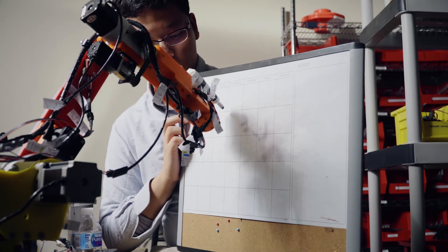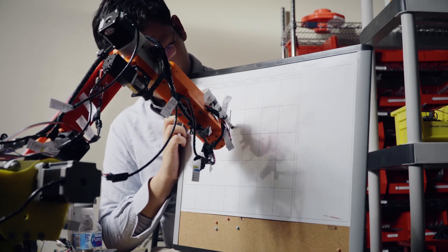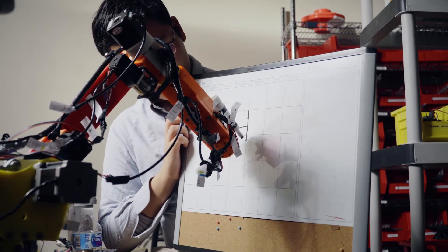If you can see on the drawing on the board, the robotic arm also replicates my movements and draws a picture over on the board.